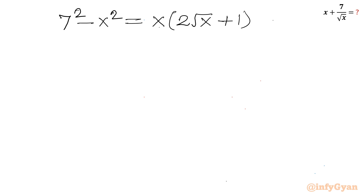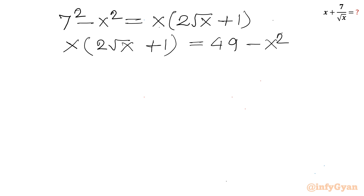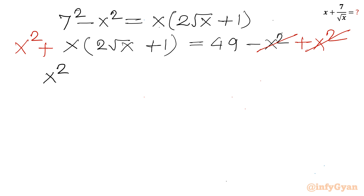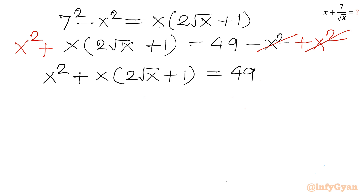Since 7² is 49, we write x(2√x + 1) = 49 − x². Now I will add x² to both sides: the −x² and +x² cancel on the right, leaving x² + x(2√x + 1) = 49 on the left-hand side.